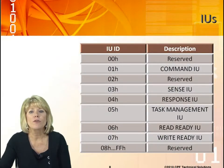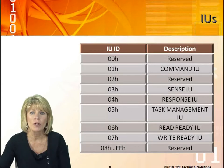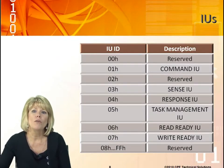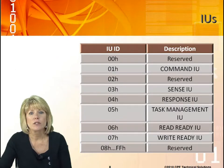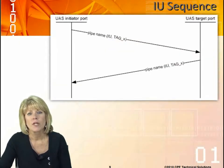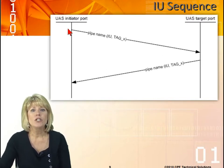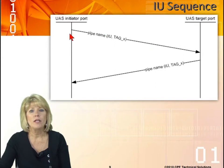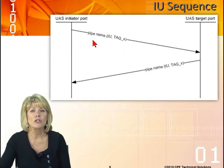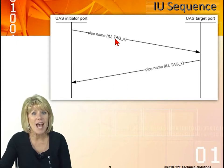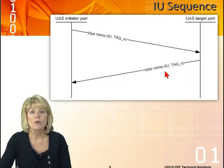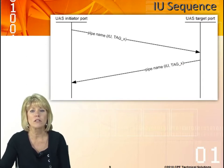If we take a look at the different commands supported for the SCSI command set, these are the different values. Looking at an IU sequence, the initiator port is going to send out the pipe name. This is basically the terminology used in the sequence — we have what pipe name it's going on, what IU, and the tag number. Coming back, it will be the pipe name, the IU, and the tag number that it corresponds to. So this is the terminology used in the next few slides.